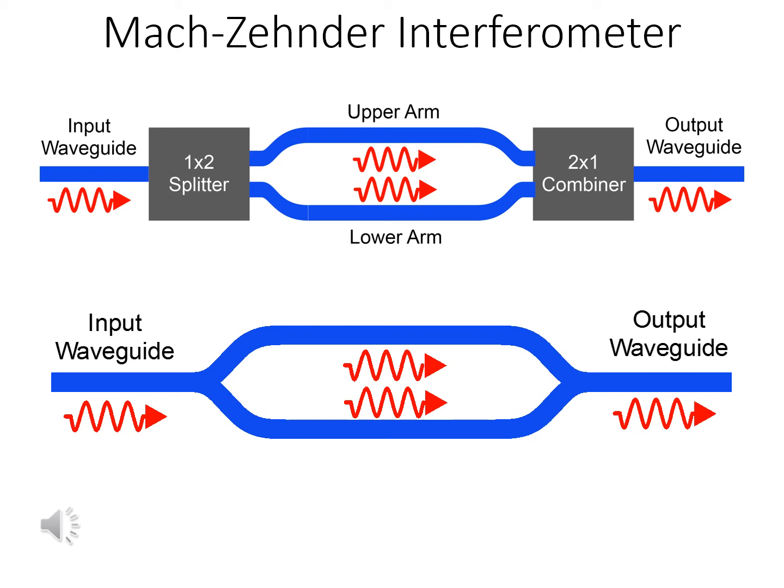A Mach-Zehnder interferometer splits a beam of light into two beams, directs the beams along separate paths, and then recombines the beams.